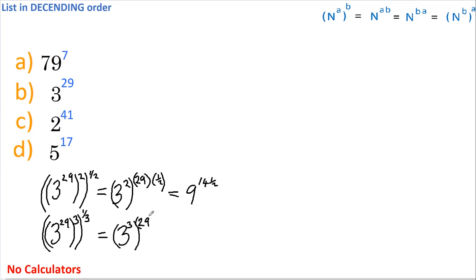So we can rearrange to get 3 to the power of 3, all raised to the power of 29 times 1 third, which equals 27 to the power of 9 and 2 thirds.